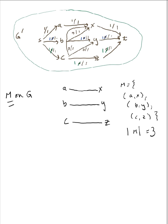I would invite you to re-solve this problem on the same original bipartite graph, but use a different order of augmenting paths, and you will find that you will always end up with the cardinality of the matching being 3.